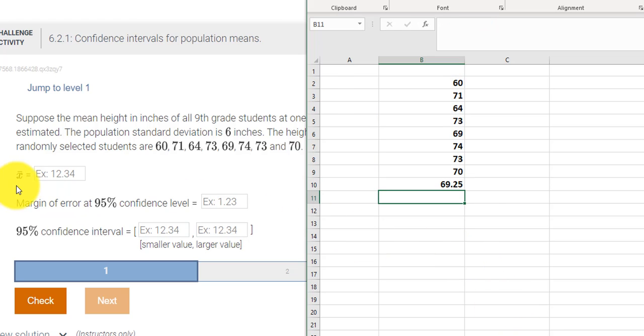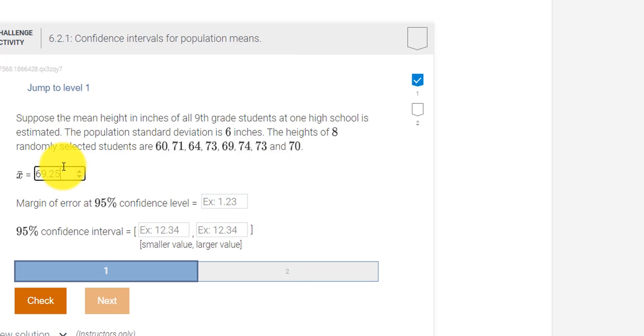So it looks like the average, or I'll just type in X bar, that's my average. Let's do a little formatting here. So my X bar is 69.25.